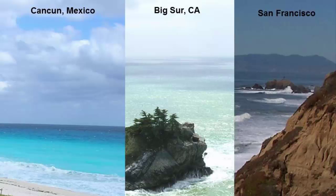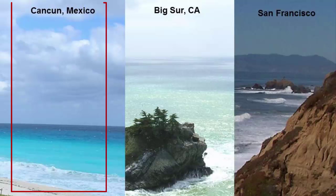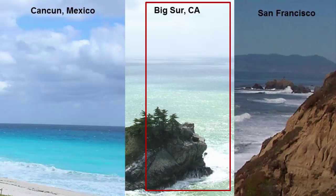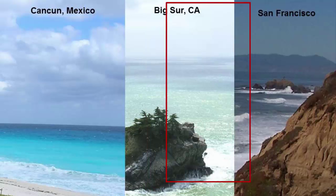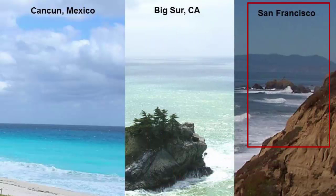The combination of all these factors leads to different colors and transparencies of waters around the world's oceans. In Cancun, Mexico, there is a lack of suspended materials or living plankton. Big Sur has a lot of plankton in the water. San Francisco has both plankton and suspended sands and muds.